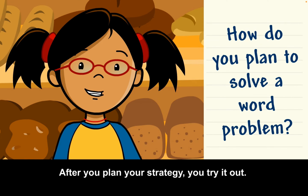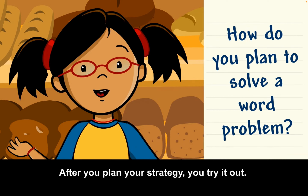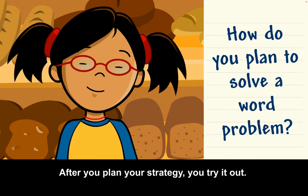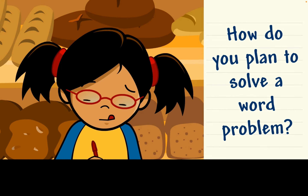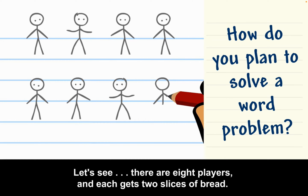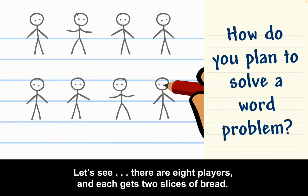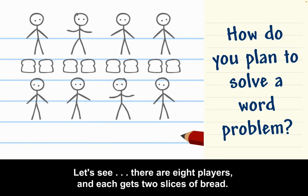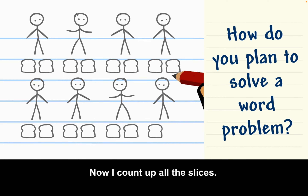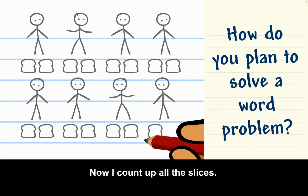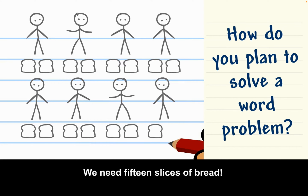After you plan your strategy, you try it out. I'm going to draw pictures. Let's see — there are eight players and each gets two slices of bread. Now I count up all the slices. We need 15 slices of bread.